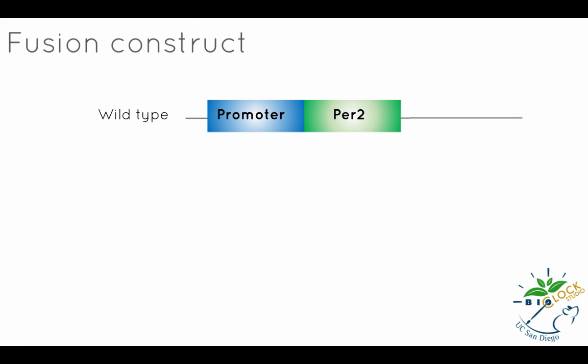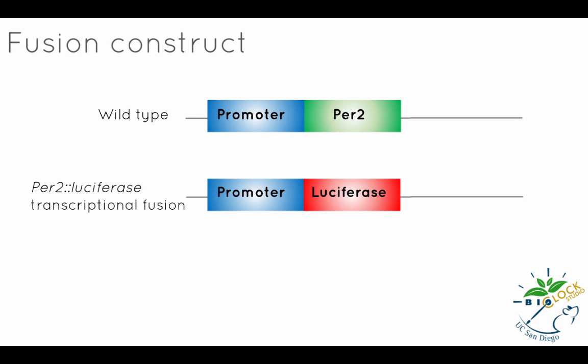The production of mRNA from a gene is controlled by a promoter sequence located upstream of the gene. To measure the activity of the promoter that drives transcription of the gene of interest — in this case PER2 — we can express luciferase under the control of the PER2 promoter so that the product will be a light-emitting enzyme. Luciferase is expressed at the same time that the gene of interest would normally be expressed from that promoter. This is called a transcriptional fusion because the luciferase gene is transcribed at the same time as the gene of interest.